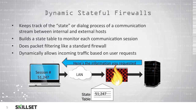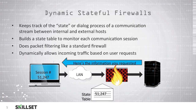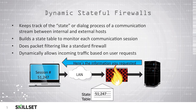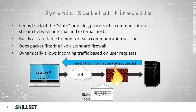When an unauthorized communication enters the network and there is no matching entry in the state table, the firewall is able to realize that no device on the internal network asked for that traffic and can block it from entering. It does packet filtering just like a standard firewall, and it is also able to dynamically allow incoming traffic based on the user's requests.